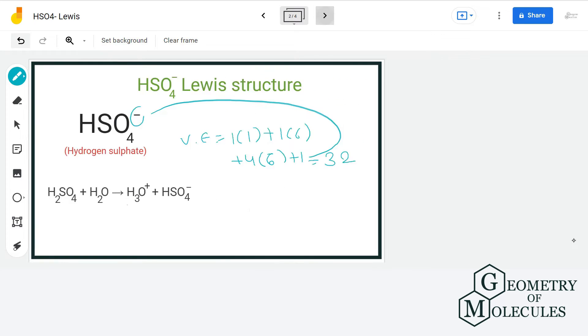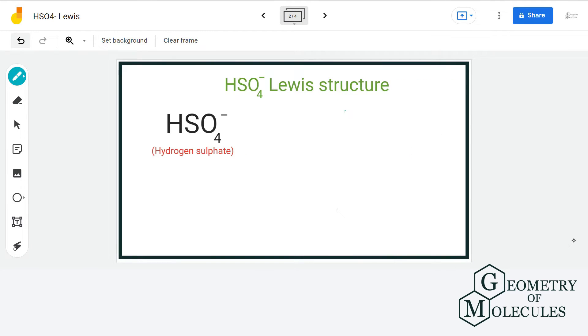Now let us see the arrangement of atoms. For that, we will place sulfur atom in the center and place 4 oxygen atoms around it somewhat like this. Also, hydrogen sulfate is an example of oxyanion of sulfur and whenever we see hydrogen connected to any oxyanion, it will be connected to oxygen atom.